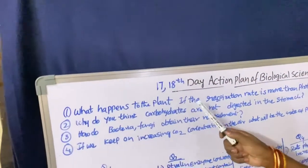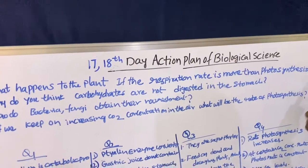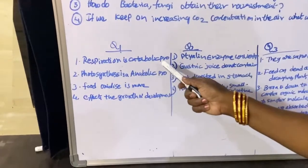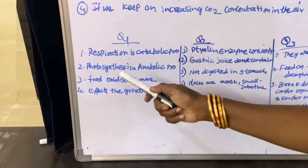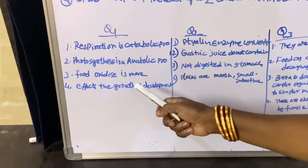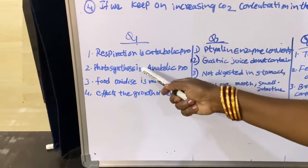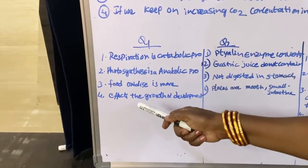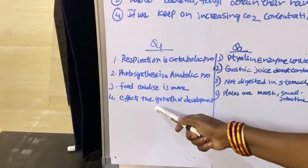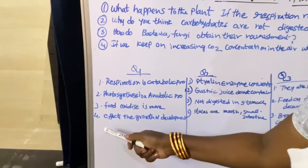What happens to the plant if the respiration rate is more than photosynthesis? The answer is: respiration is a catabolic process, and photosynthesis is an anabolic process. The food oxidation is more in respiration than photosynthesis. If the respiration rate is more, it affects the growth and development of the plant, and ultimately the plant may die.